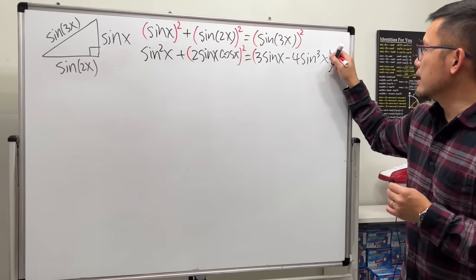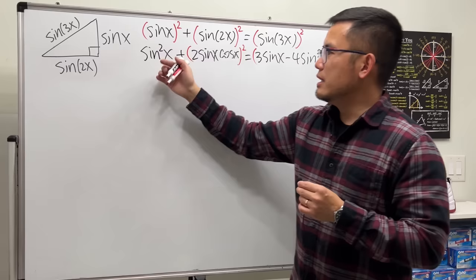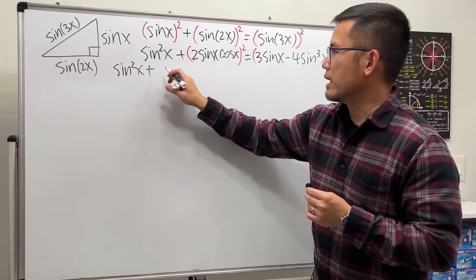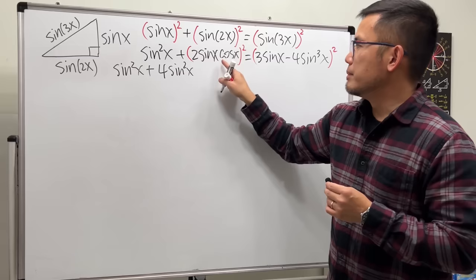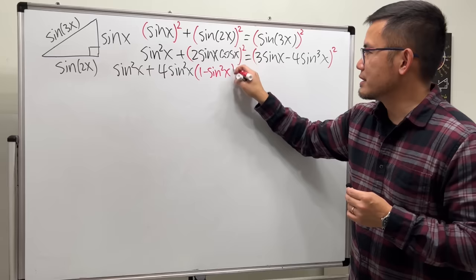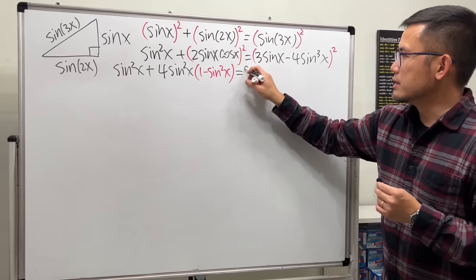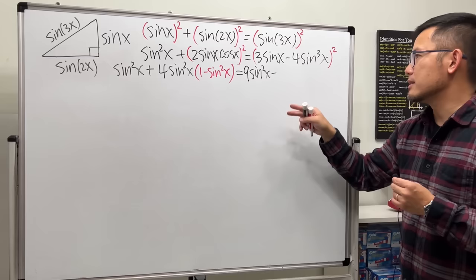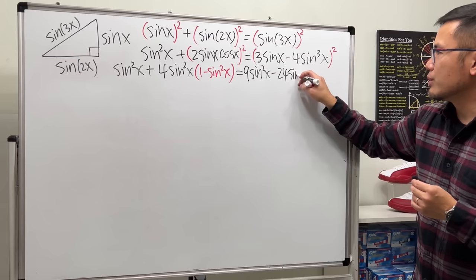Now we'll fix this up. This is already sine squared x. And we have 2 squared times all that, so we have 4 sine squared x. But for cosine squared, let's express everything in terms of sine. Cosine squared x is the same as 1 minus sine squared x. And that equals — expanding the triple angle term — we square the first term: 3 squared is 9 times sine squared x, then minus 2 times 3 times 4, which is 24, times sine to the fourth power x.